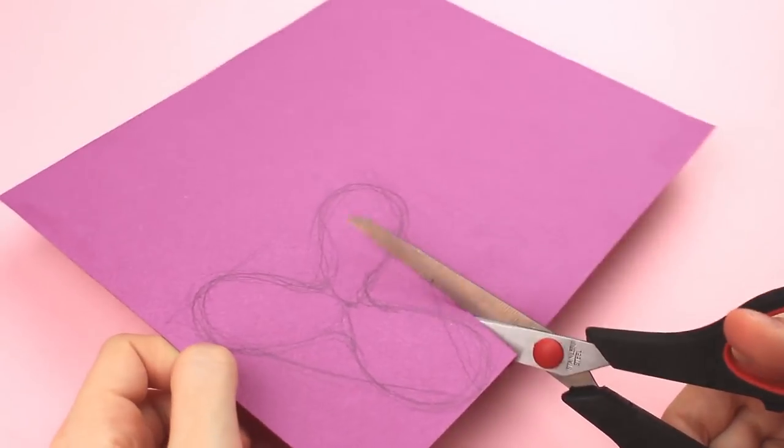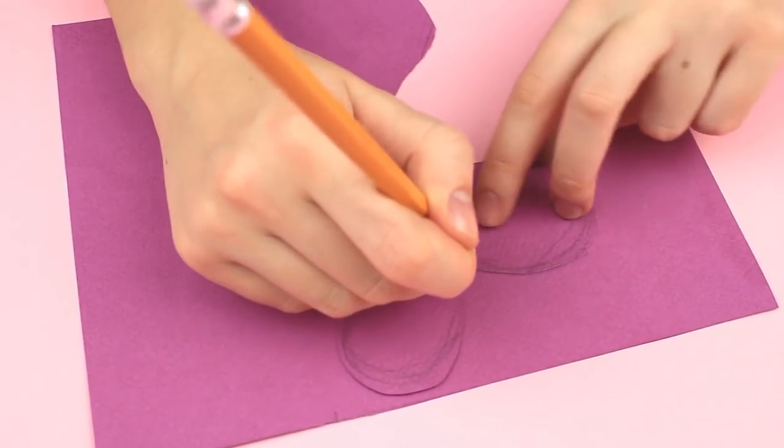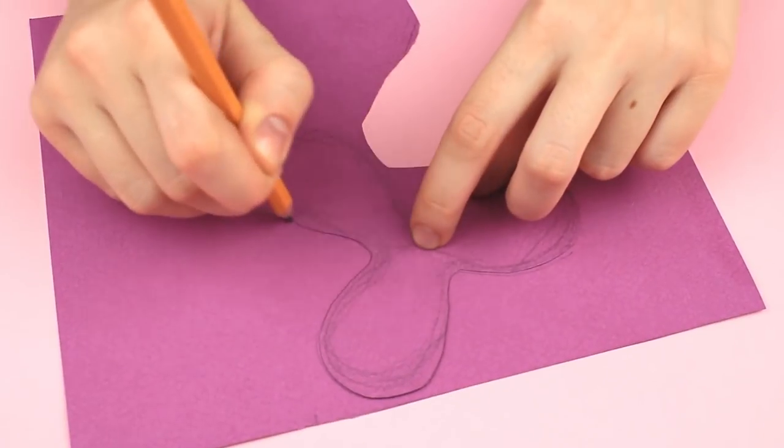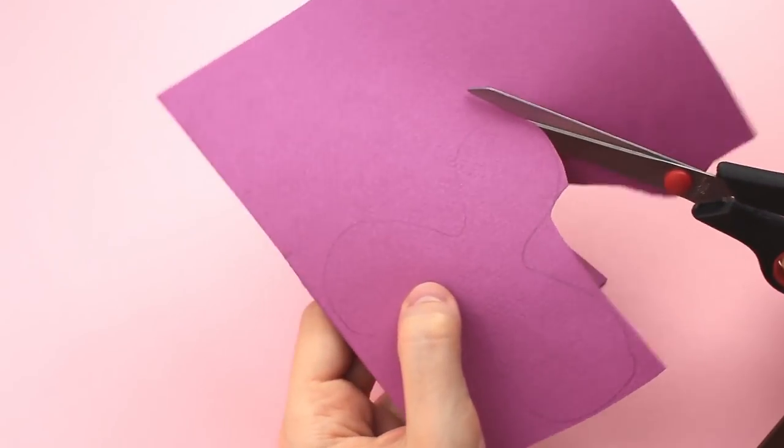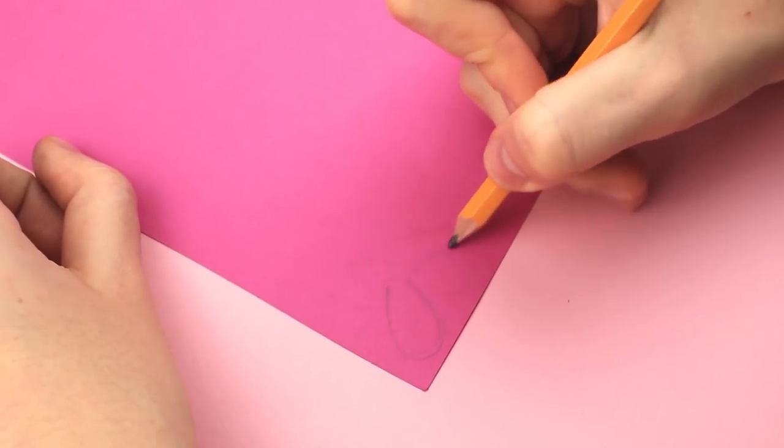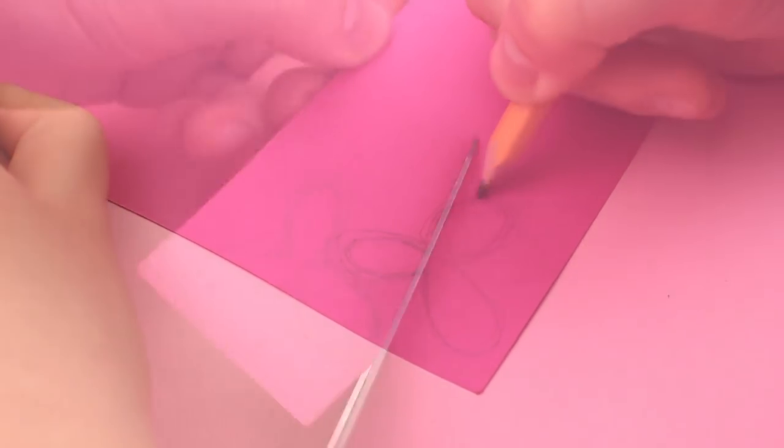Cut it out. Trace the cutout as we need another of the same detail. Cut it out. Draw a smaller three petal element on lilac paper. Cut them out.